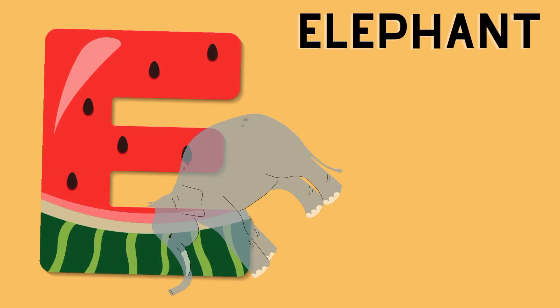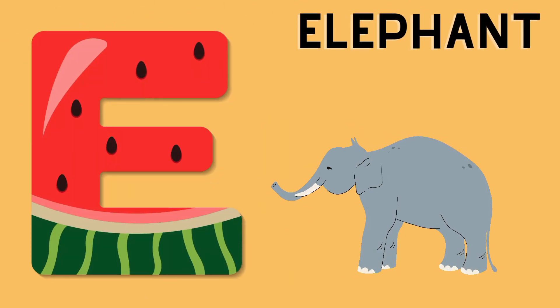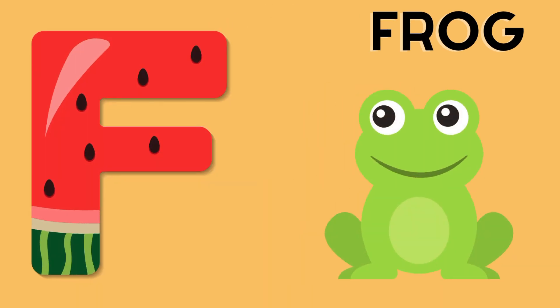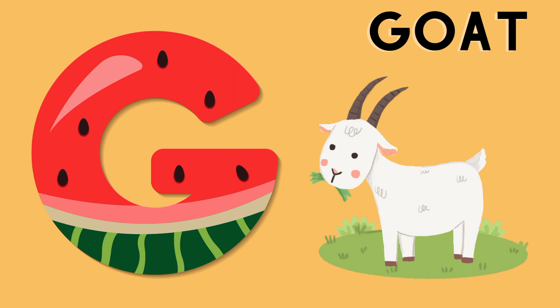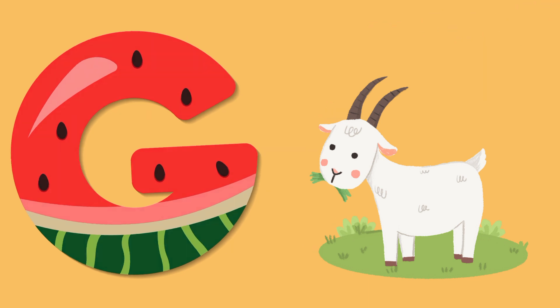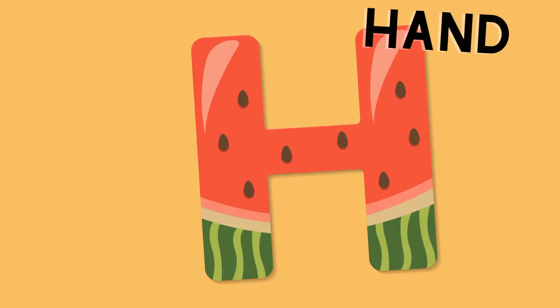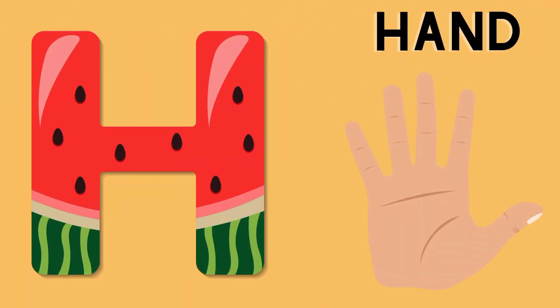E is for elephant, e-e-elephant. F is for frog, f-f-frog. G is for goat, g-g-goat. H is for hand, a-a-hand.